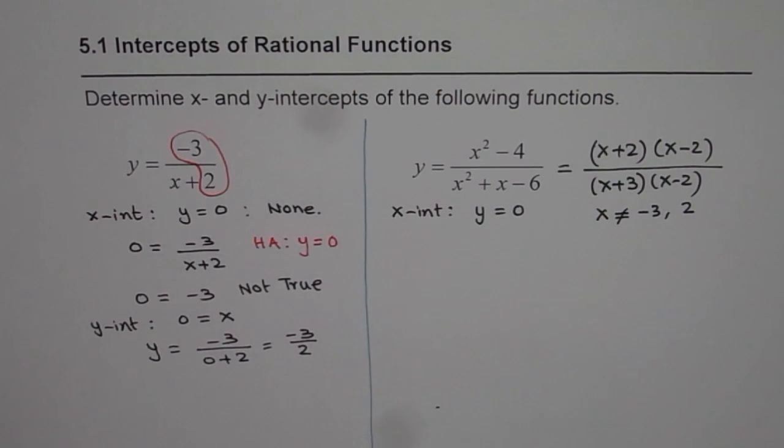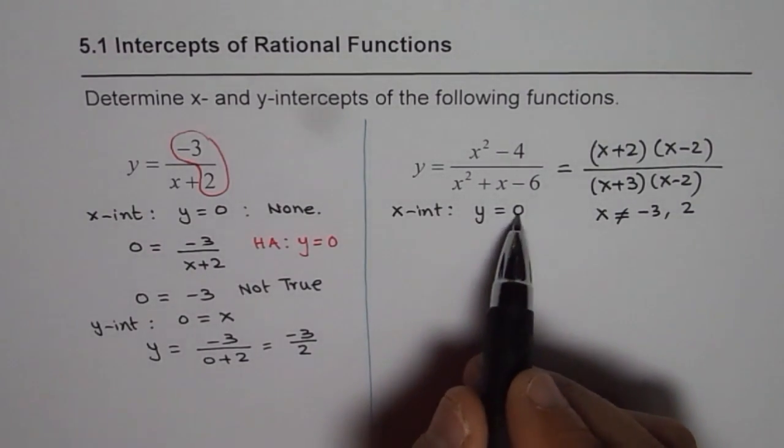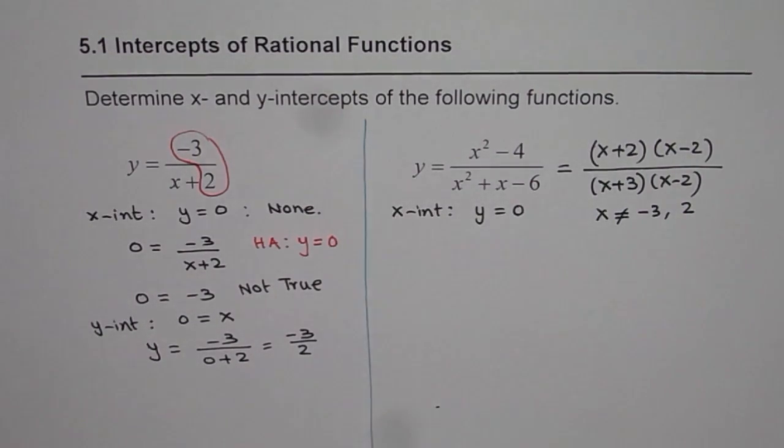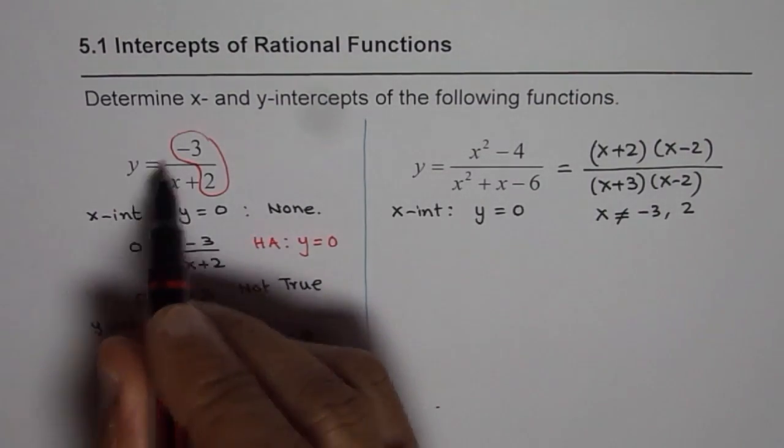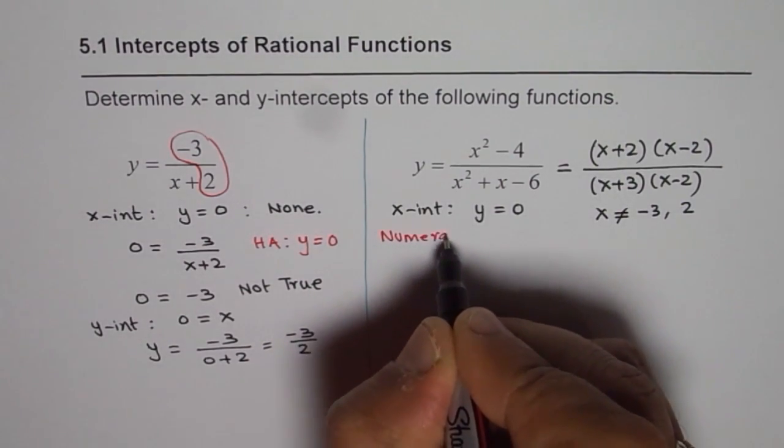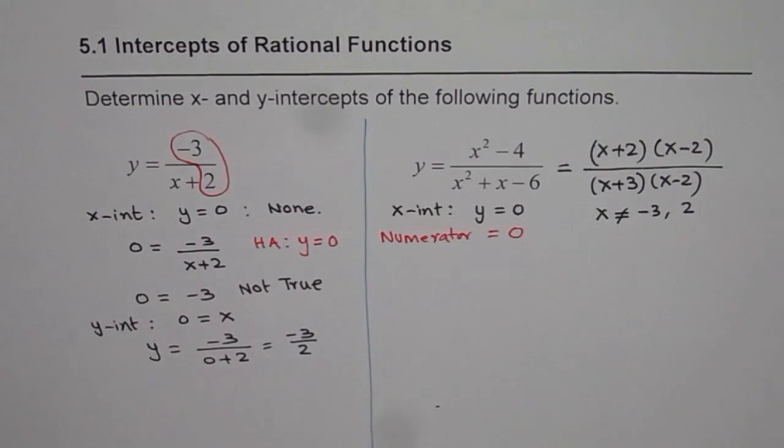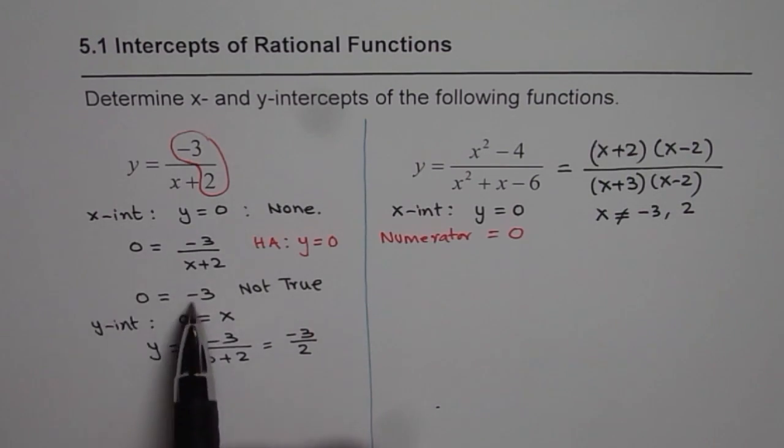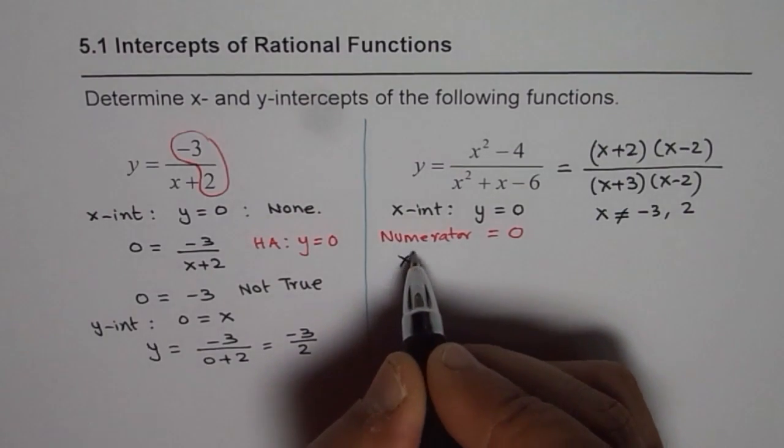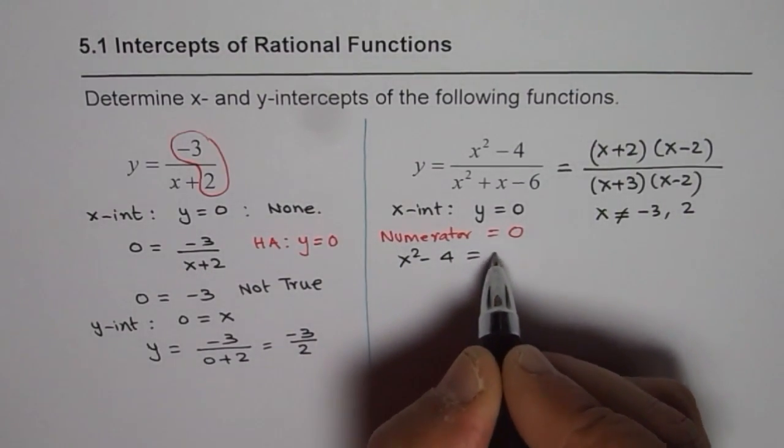Now let us work with our x intercept. x intercept means y equals 0. That means the numerator should be 0. As a quick step, we should equate numerator to 0. Here also, minus 3 equals 0, which is not true. So here we will write x squared minus 4 equals 0, because y is 0.